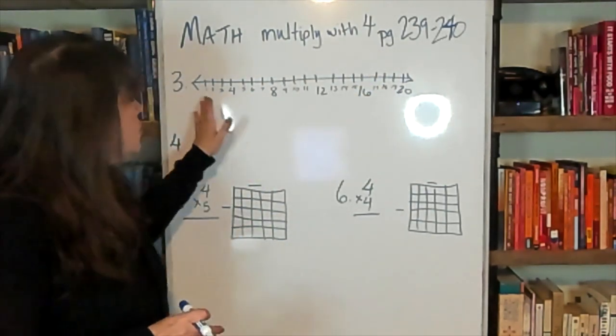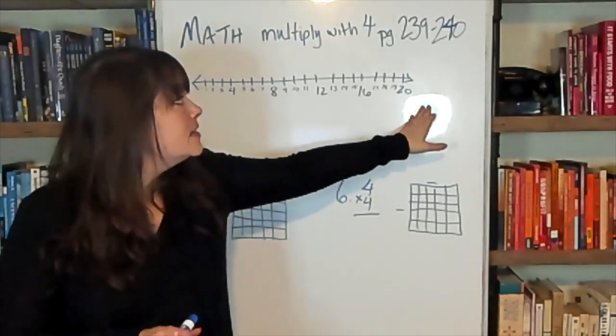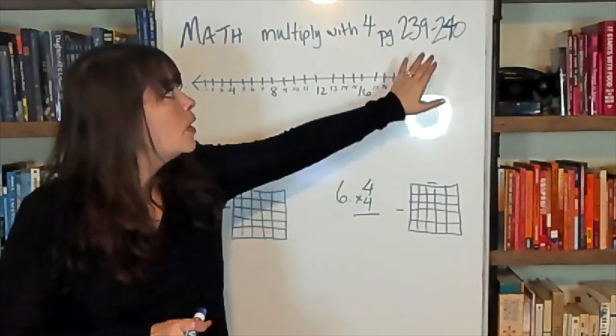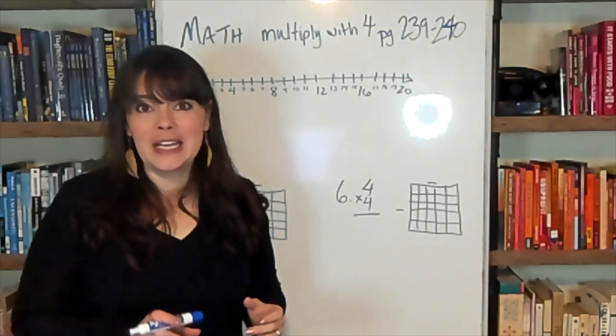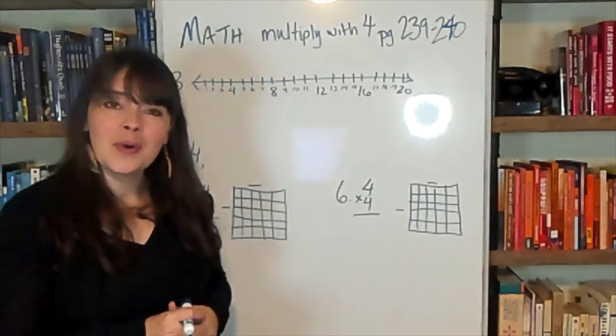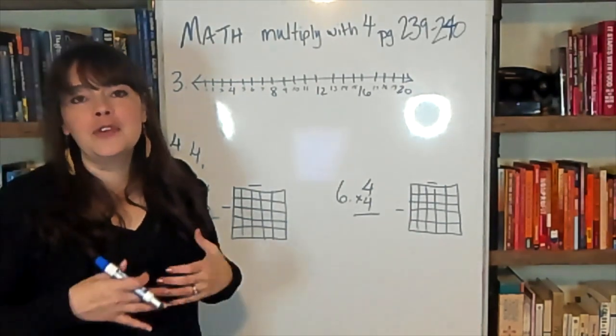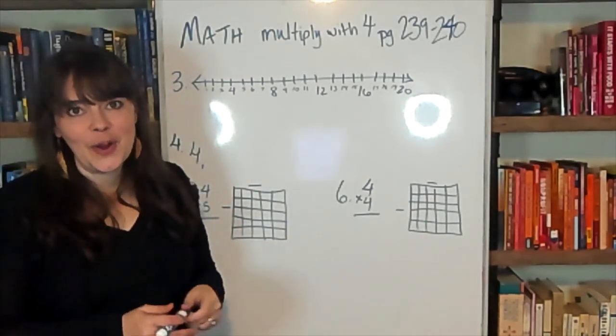We are going to start with doing a problem with the number line. We're going to work several problems from your worksheet. Your homework today is page 239 to 240. So get that out right now and we'll work some of the problems together and you'll feel ready to solve the rest on your own.